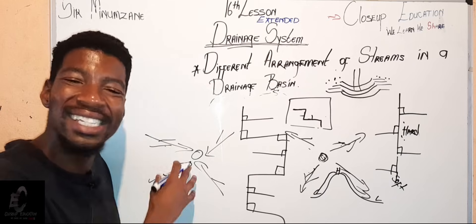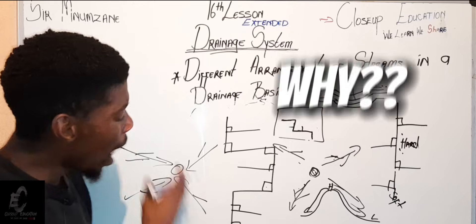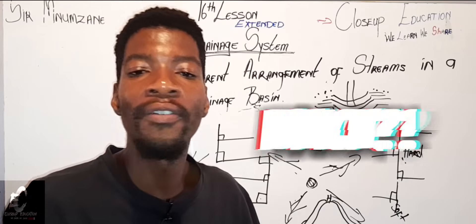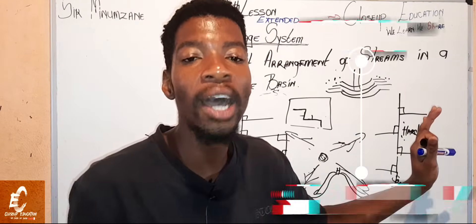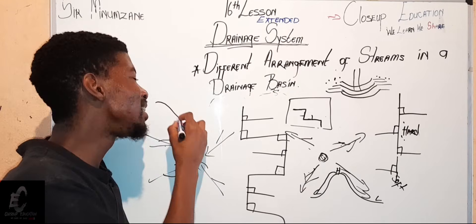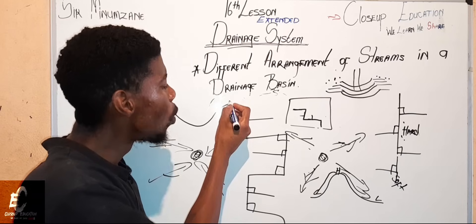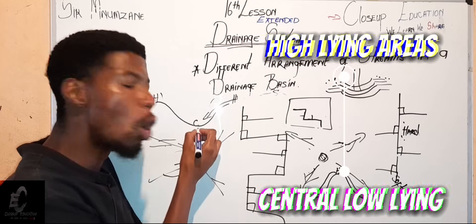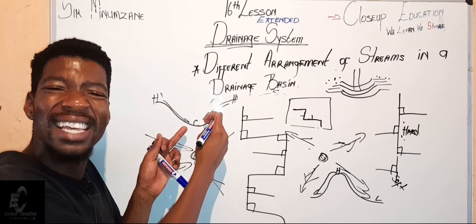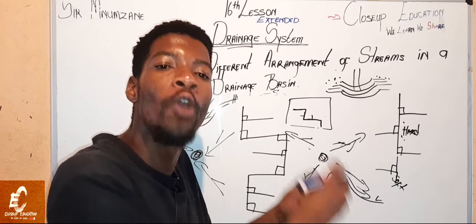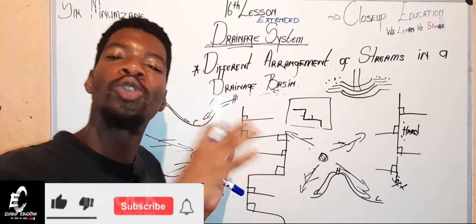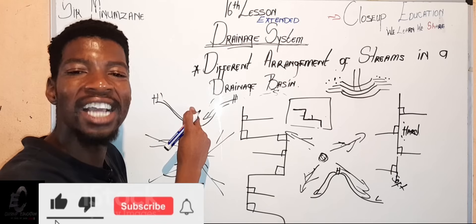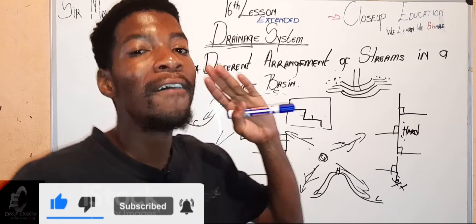If you see streams flowing to a central low point, that is the centripetal pattern. The underlying rocks can be igneous or sedimentary. They have a basin-like shape, so when water moves from a high-lying area it flows toward the central low. The radial pattern has a dome-like shape; the centripetal has a basin-like shape.